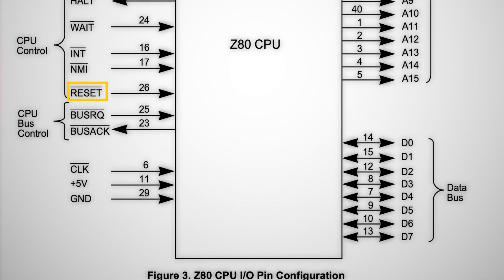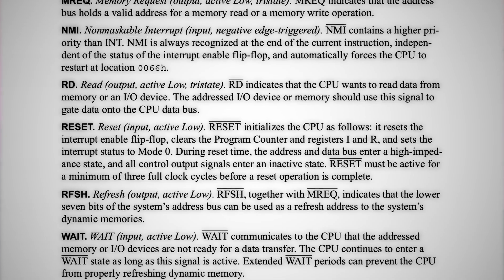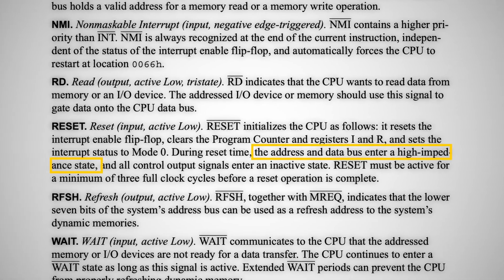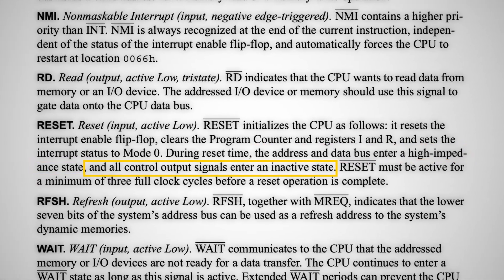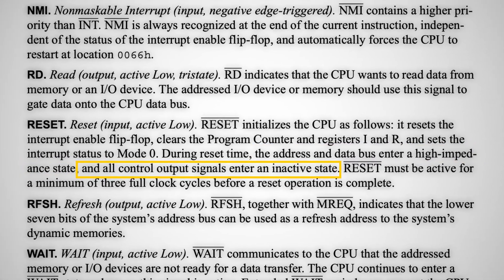So with the Z80 pins in a high impedance state, a secondary processor like the Arduino can drive those pins instead, allowing for direct memory access. But aside from bus request, there's another pin that does something similar: the reset pin. The manual says that in the reset state, the address and data bus enter a high impedance state, and all control signals enter an inactive state. When I first read this, I assumed it meant that the control signals were also floating, allowing for direct memory access during reset, as with bus request.